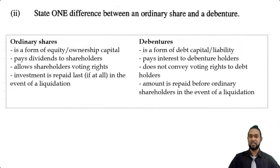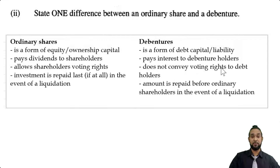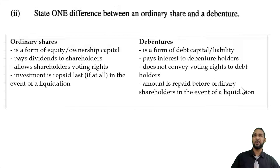I'm just going to give you more than one difference between ordinary shares and debentures too. Ordinary shares are a form of equity or ownership capital; a debenture is a form of debt capital or a liability. Ordinary shares pay dividends to shareholders; debentures pay interest to debenture holders. Ordinary shares allow shareholders voting rights, whereas debentures do not convey voting rights to debt holders. And in a liquidation, ordinary share investment is repaid last if at all, while debentures are repaid before ordinary and preference shares — and if it's a secured debenture, it's definitely going to be paid.